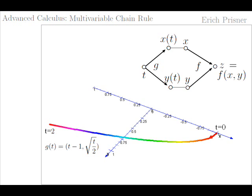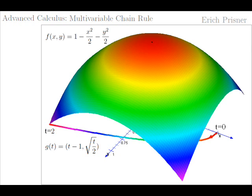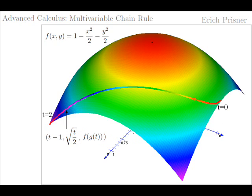The multivariable function f has two input values and one output value: c equals f(x, y). Its graph defines a surface, like in this example for f(x, y) equals 1 minus x² over 2 minus y² over 2. Next, assume that we are not just moving on the parametrized curve in the xy-plane, but rather in three dimensions on the surface above that curve — we are lifting the curve onto the surface.